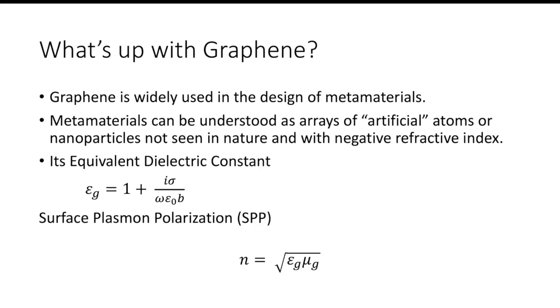What's the importance of graphene? Graphene is widely used in the design of metamaterials. Metamaterials can be understood as arrays of artificial atoms or nanoparticles.